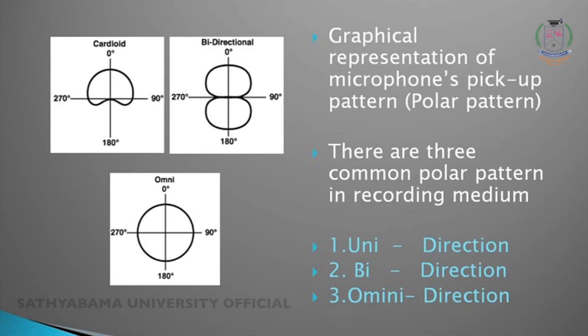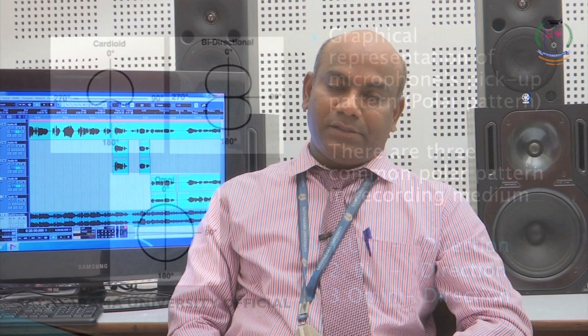Microphone polar pattern is nothing but a microphone pickup pattern. It means the sensitivity or directionality of a microphone. There are three types of pickup pattern: the first one is unidirectional, the second one is bi-directional, and the third one is omnidirectional.